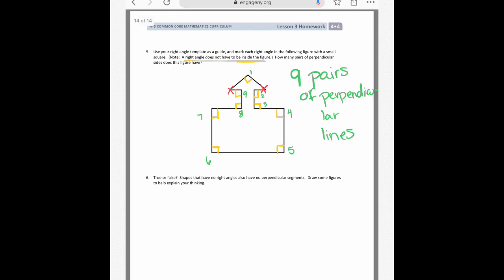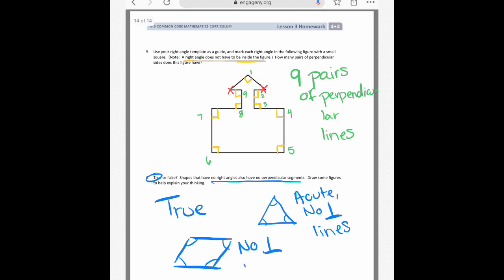And then this last one says true or false. Shapes that have no right angles also have no perpendicular segments. So let's see if we can draw, is there any shape you can even think of that you could draw that has a right angle that doesn't have a perpendicular segment and you can't. So the answer is true because if you were going to draw something that was perpendicular, it would have to be at a right angle. So here's an example. Here's a triangle, an acute triangle, but it doesn't have any perpendicular segments because it doesn't have any right angles. Also I could draw this parallelogram. It has no right angles and therefore has no perpendicular pairs of lines.